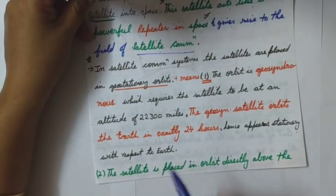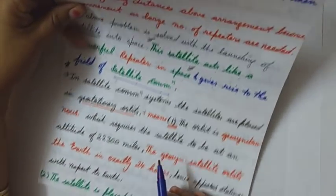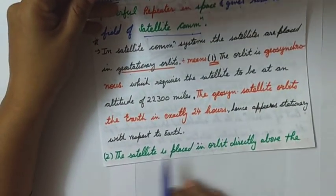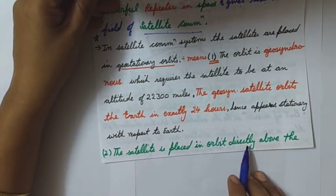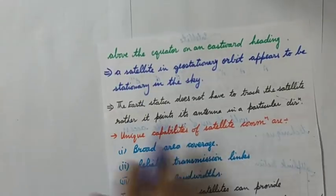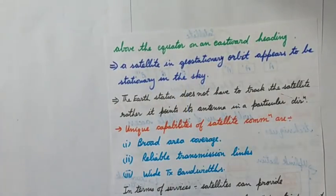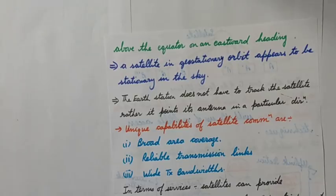Because the satellite orbits in exactly 24 hours, it is in a stationary condition with respect to earth — both are revolving at the same speed. The second condition is that the satellite is placed in an orbit directly above the equator on an eastward heading. Only when both these conditions are met do we say the satellite is placed in a geostationary orbit.